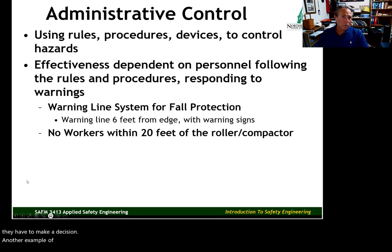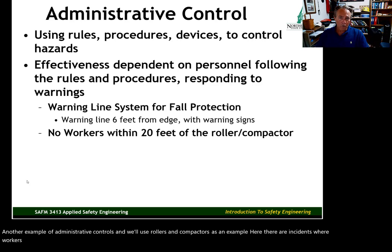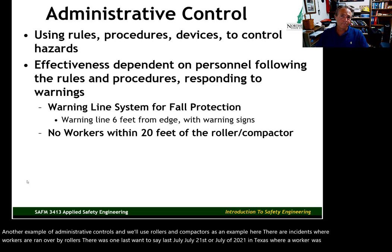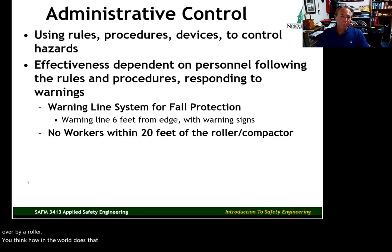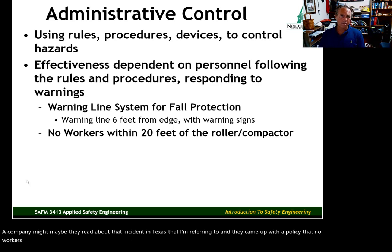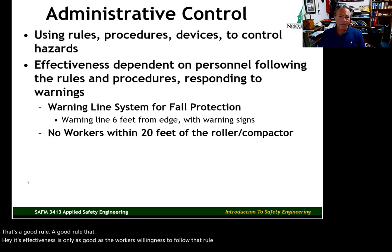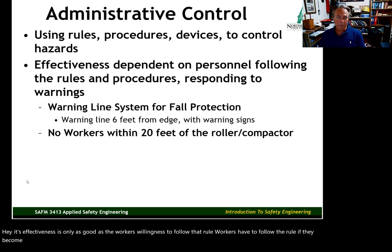Another example using rollers and compactors: there are incidents where workers are run over by rollers — one occurred in July 2021 in Texas. A company might respond by creating a policy that no workers come within 20 feet of the roller. That's a good rule — but workers have to be willing to follow it. If they become complacent or think the rule doesn't apply to them, they can encroach within that 20-foot safe zone. There are some engineering controls discussed in the roller article that can also help protect ground workers from moving equipment.